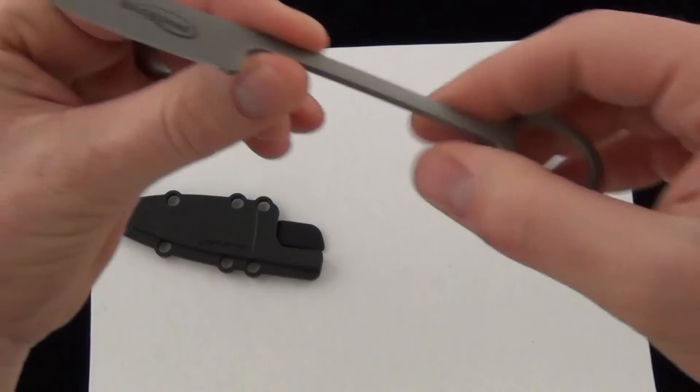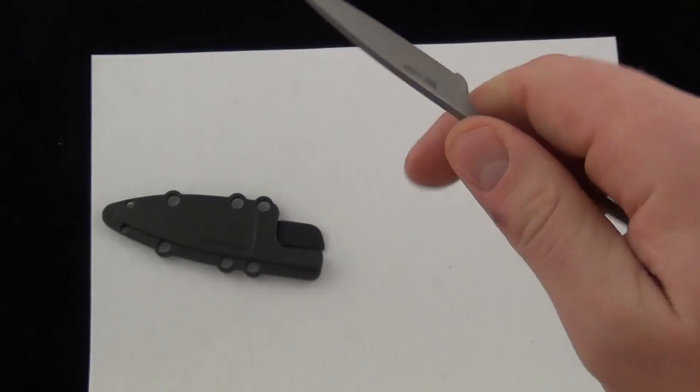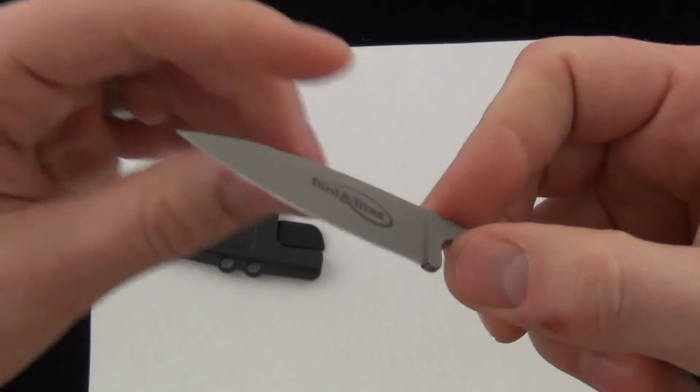So it's got this long, skinny handle. It's got a ring. You can put it on your pinky like so. And you've got a lot of control. It's a small blade. You can get your index finger up here.